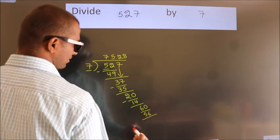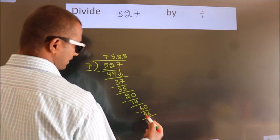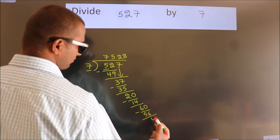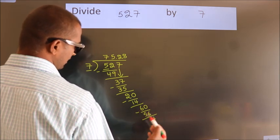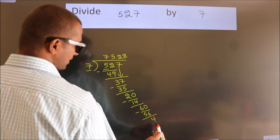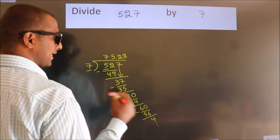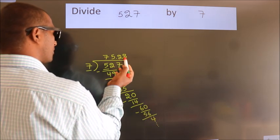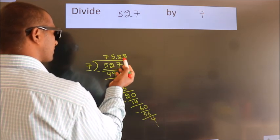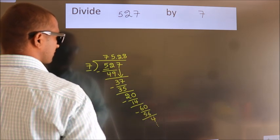Now we subtract. We get 4. The division continues, but it is enough if we do up to 2 decimal places.